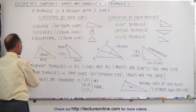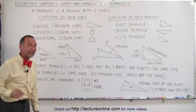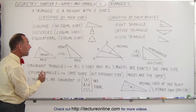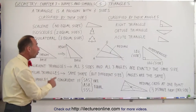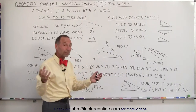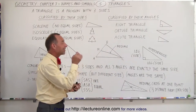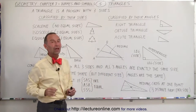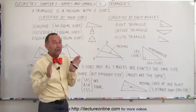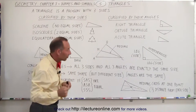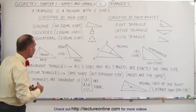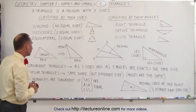Notice the word congruent — in this case, we're talking about congruent triangles. That means that all three sides and all three angles of two triangles being compared are of exactly the same size. Now they may be oriented differently, but if all three sides are the same size and all three angles are the same size, they're called congruent triangles.